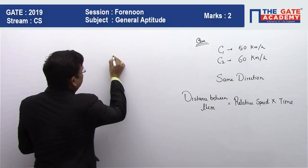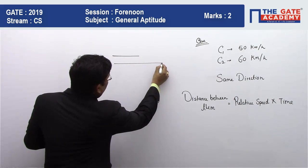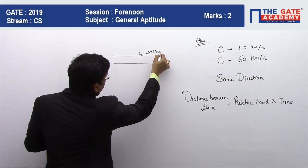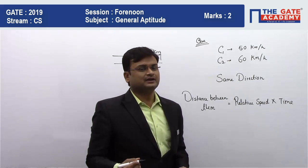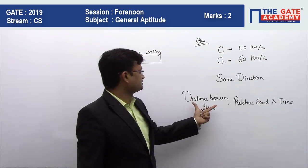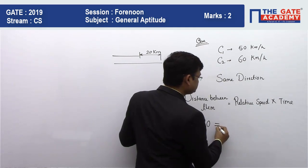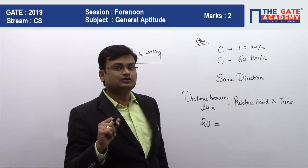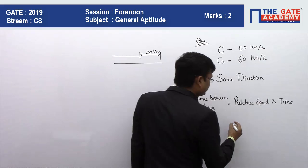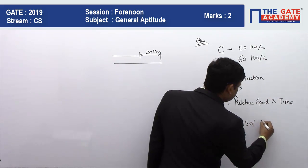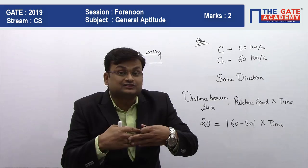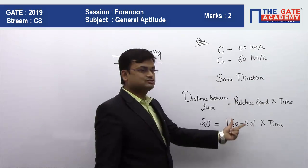One car is going slow, the other is going fast — when will the distance between them become 20 kilometers? This question is very simple if you know the concept of relative speed. The distance between them is given as 20 kilometers. When the cars are traveling in the same direction, the relative speed is the difference of their speeds. When cars travel in opposite directions, the relative speed is the sum. So here the relative speed will be the difference: 60 minus 50 equals 10 km/h.